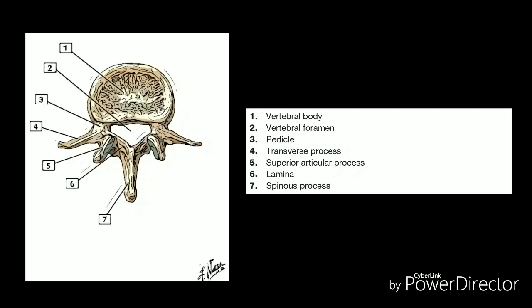The facet joints of the spine allow back motion. Each vertebra has four facet joints: one pair that connects to the vertebra above, the superior facets, and one pair that connects to the vertebra below, the inferior facets.